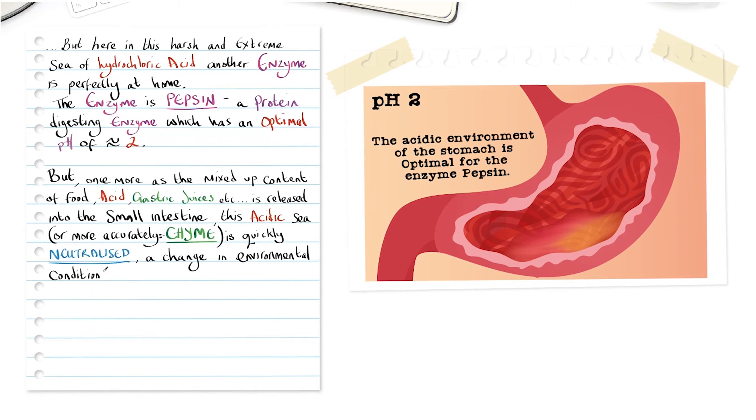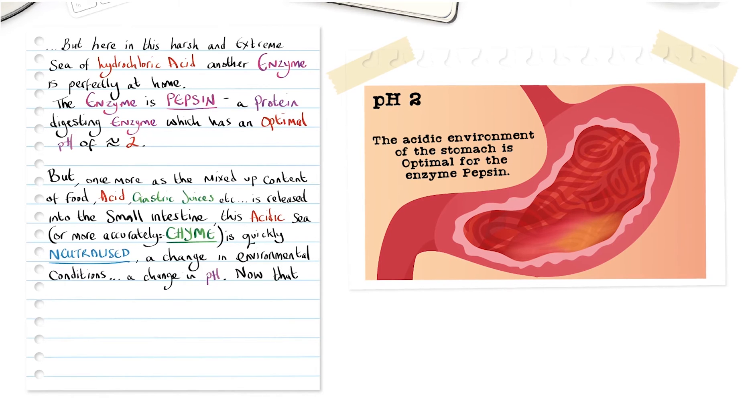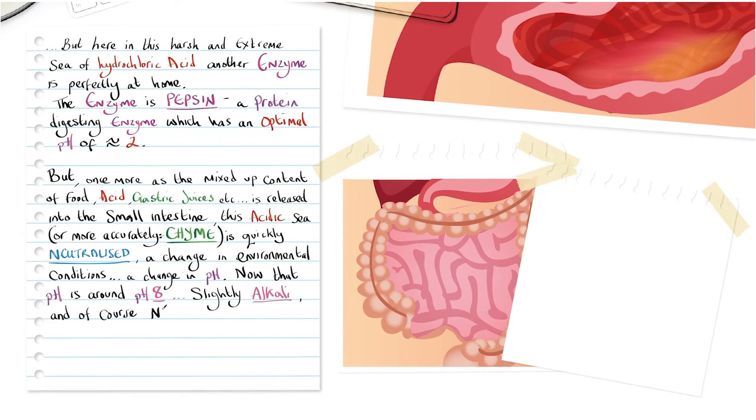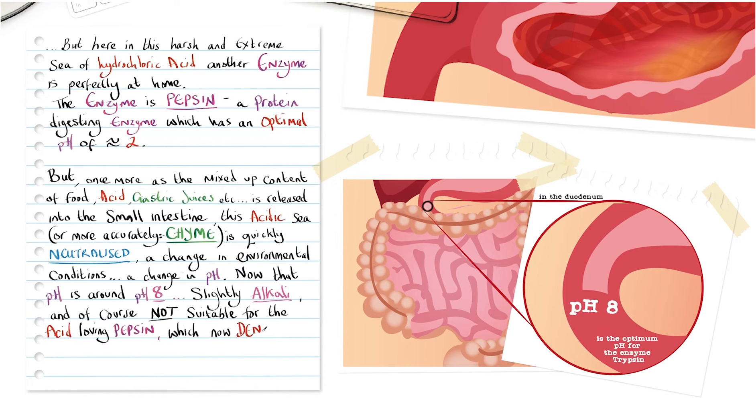A change in environmental conditions, a change in pH. And now that the pH is around pH 8, slightly alkali, and of course not suitable for the acid-loving pepsin, which now denatures, its ionic and hydrogen bonds disrupted, broken, beyond return.